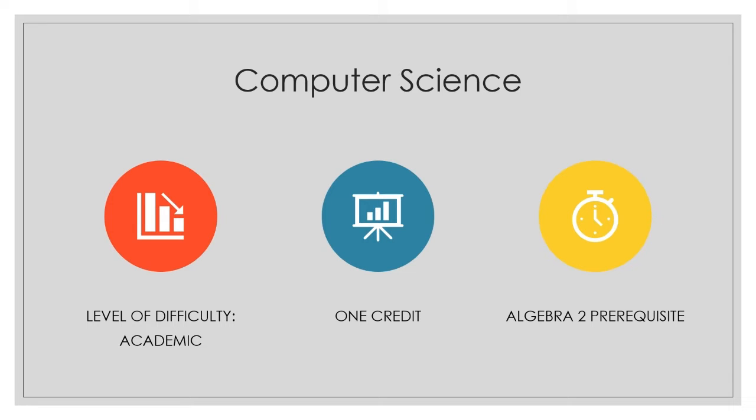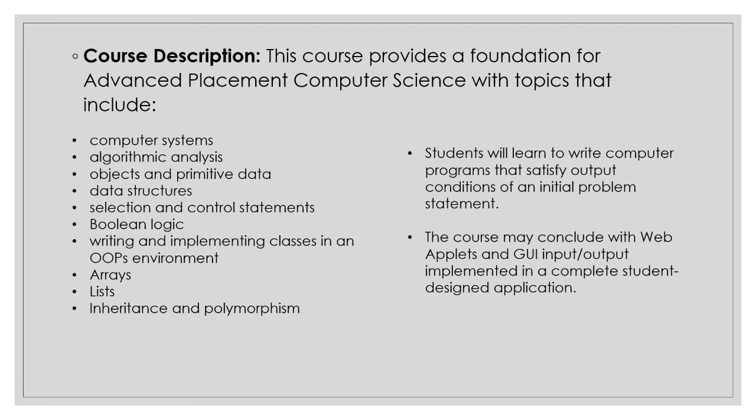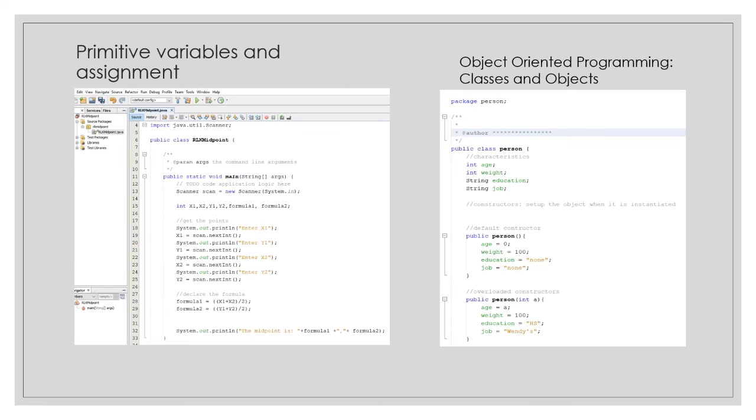To be successful in programming, one must be able to think abstractly, and there is a correlation to the abstractions of math. A successful programmer must be able to think a few steps ahead and have the ability to find creative solutions.